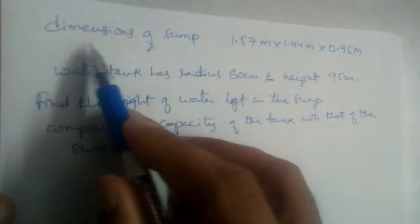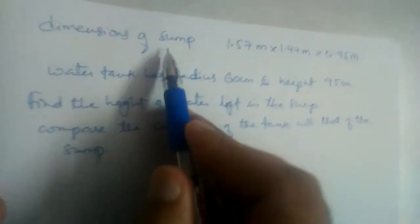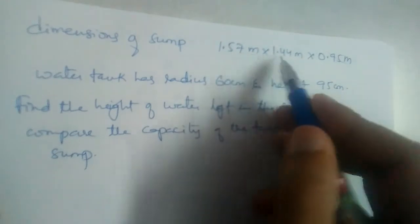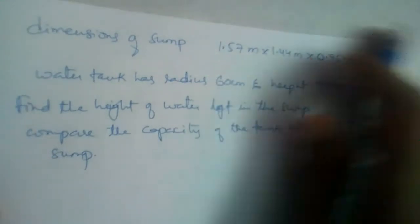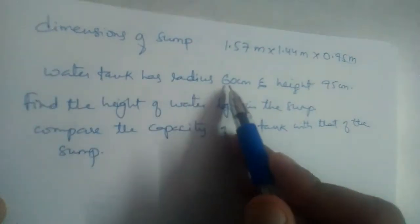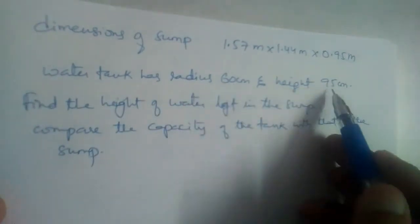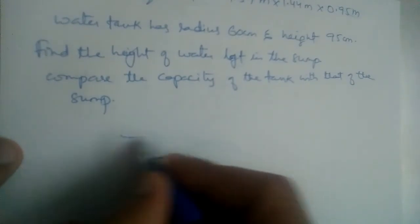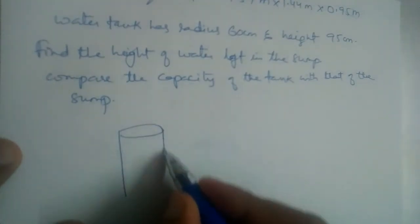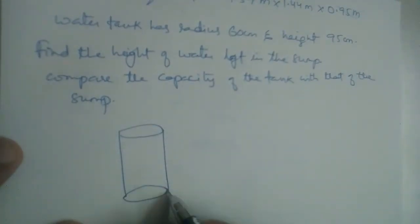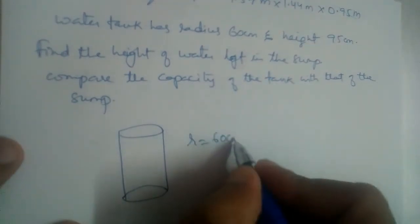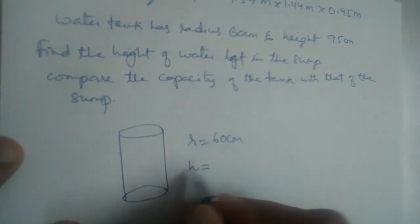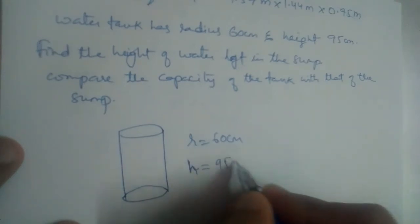From that question, I took the dimensions. Dimensions of the sump: 1.57m x 1.44m x 0.95m. And water tank has a radius of 60 cm and height 95 cm. It is in the shape of a cylinder. This is the water tank. What is the radius? 60 cm. And what is the height? H is equal to 95 cm.